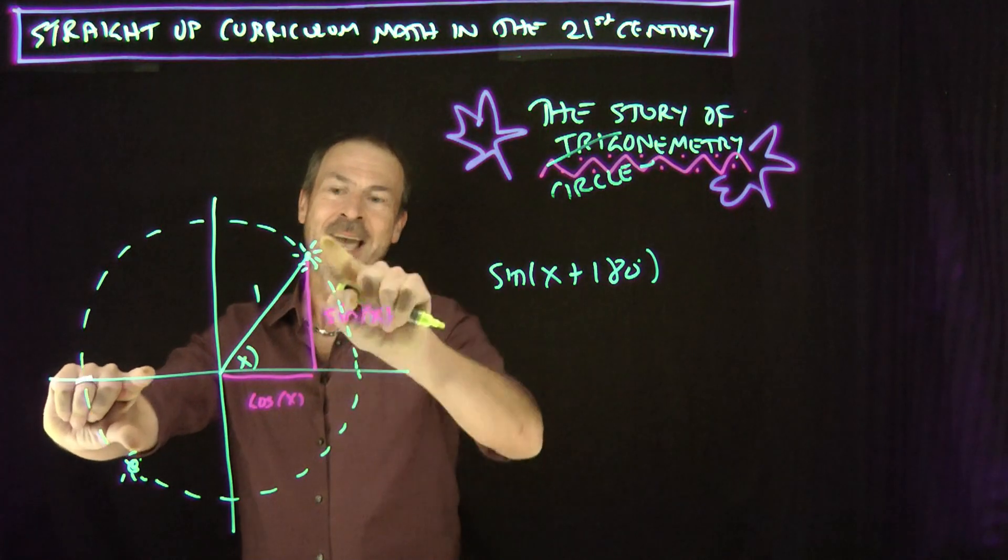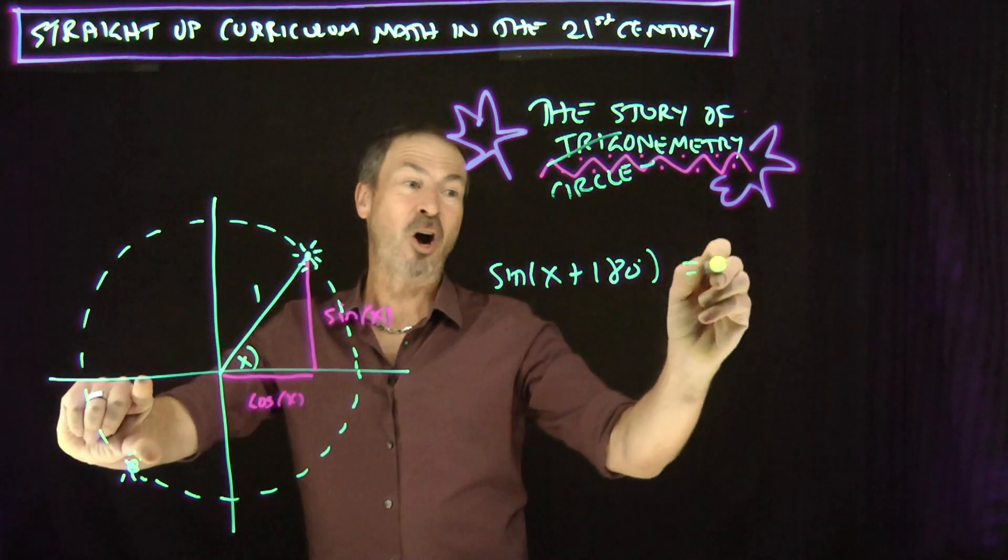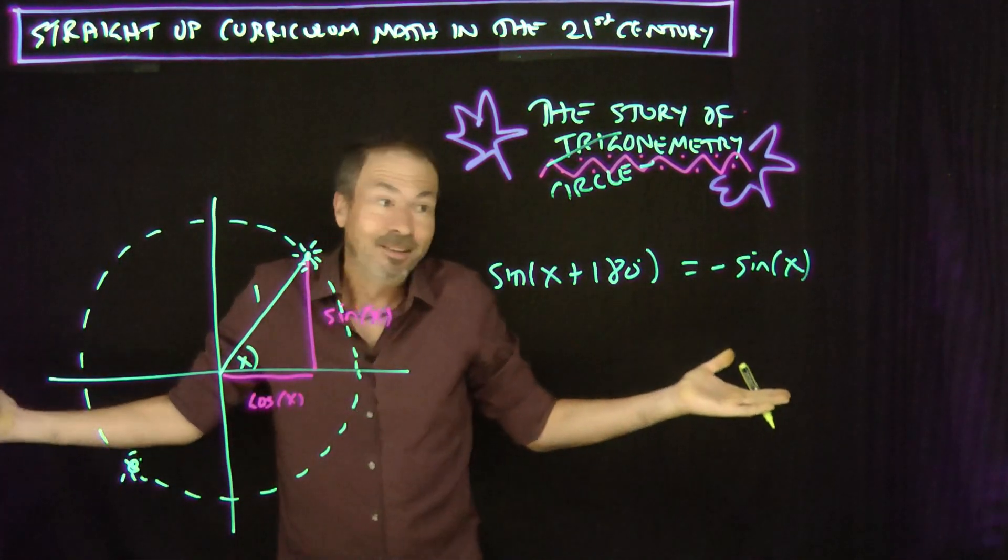And I guess by symmetry, you can see, oh, I have some height there. I have exactly the same height, but in the opposite direction. It'll be the opposite of the height I just had before. There's a trig identity. Great!